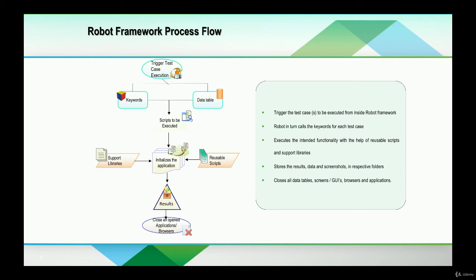Finally, let's learn how the Robot Framework process flow works. We've understood the concepts of data driven and keyword driven — but how does Robot Framework use these in its process flow? Imagine you have test cases written inside Robot Framework. As a user, you will trigger and play the test cases. The first thing Robot Framework does is call the keywords for each test case, and then the scripts execute the intended functionality with the help of supporting libraries.